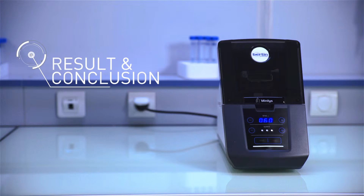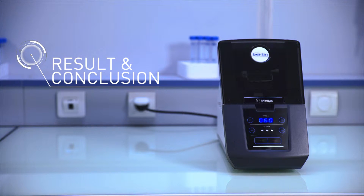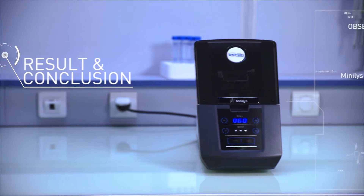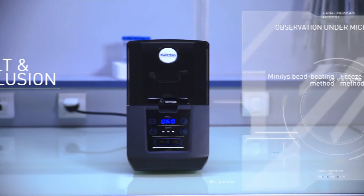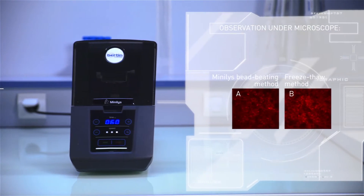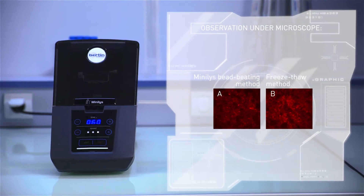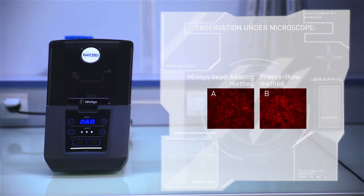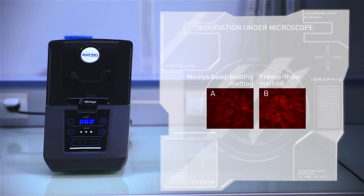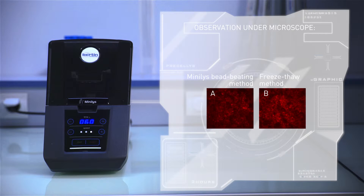The images show that the Minilis efficiently releases rAAV vectors, and the resulting crude cell lysate is effectively used to transduce HEK293T cells in Image A. Transduction efficiency is similar compared to the freeze-thaw method in Image B.